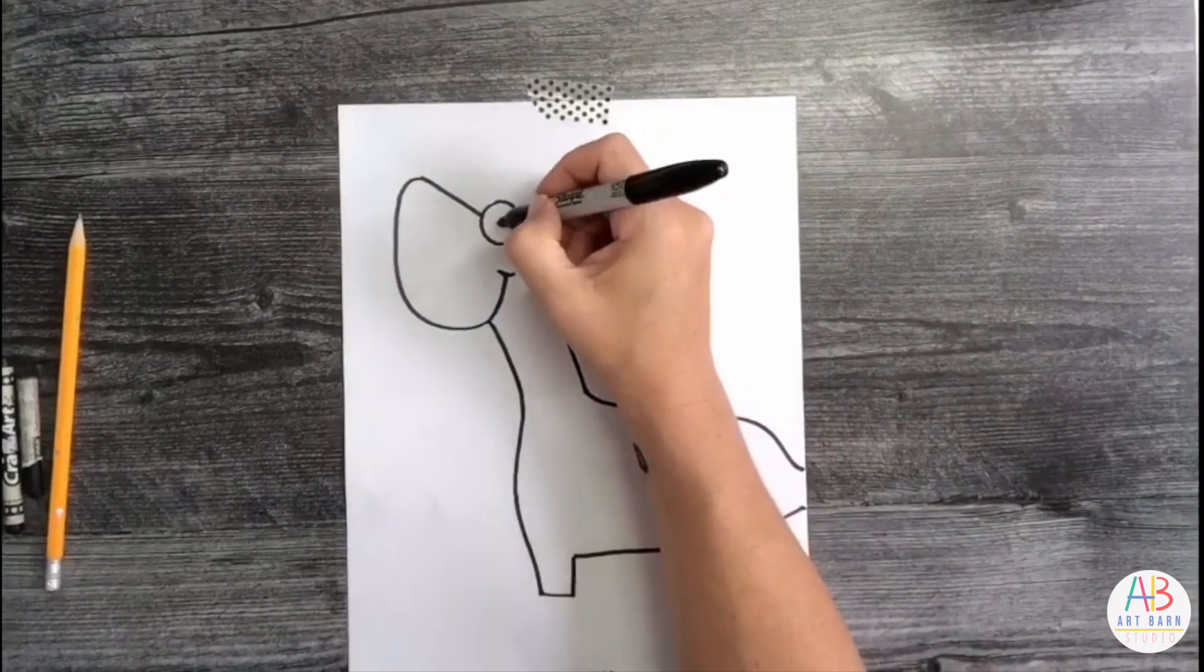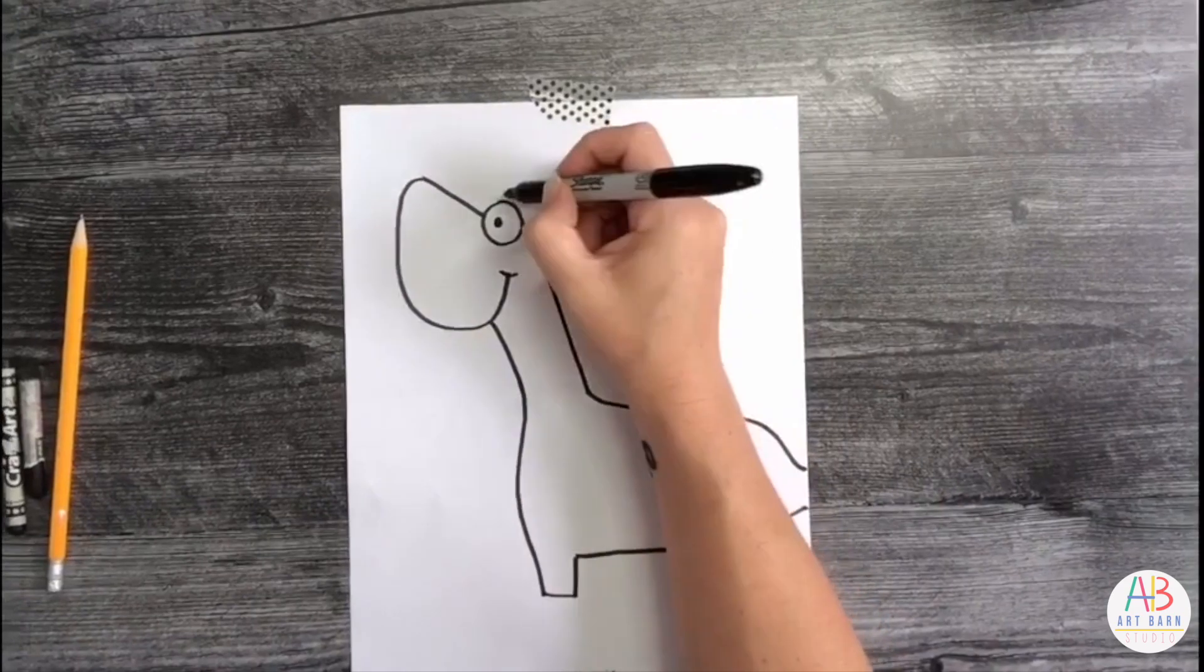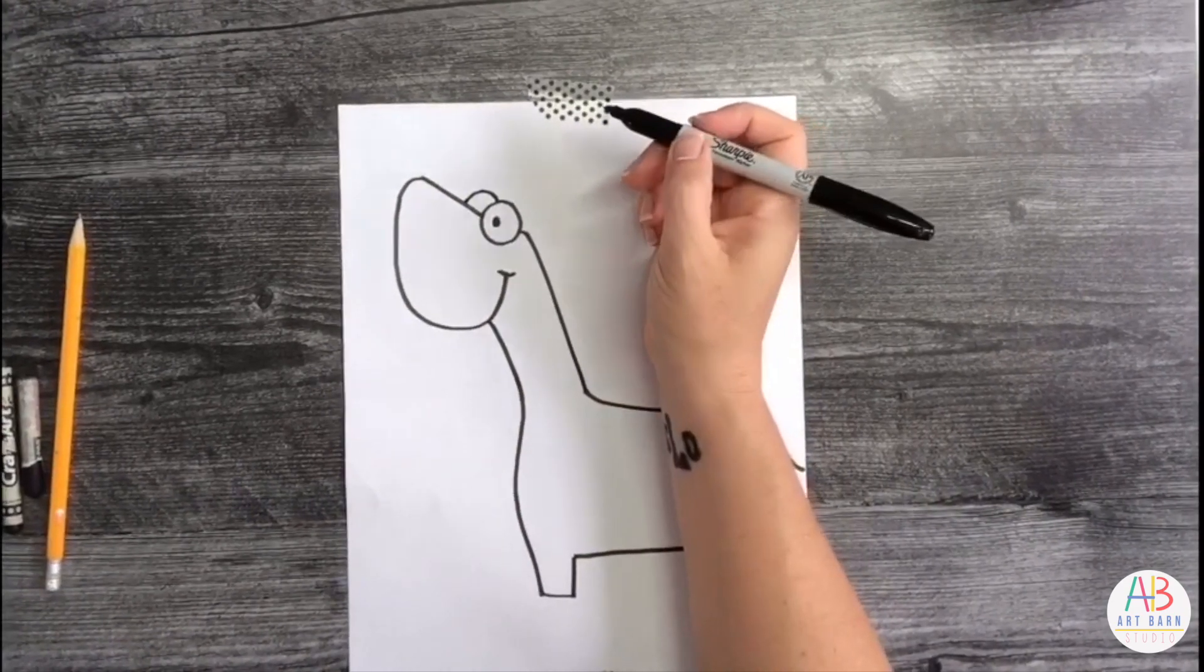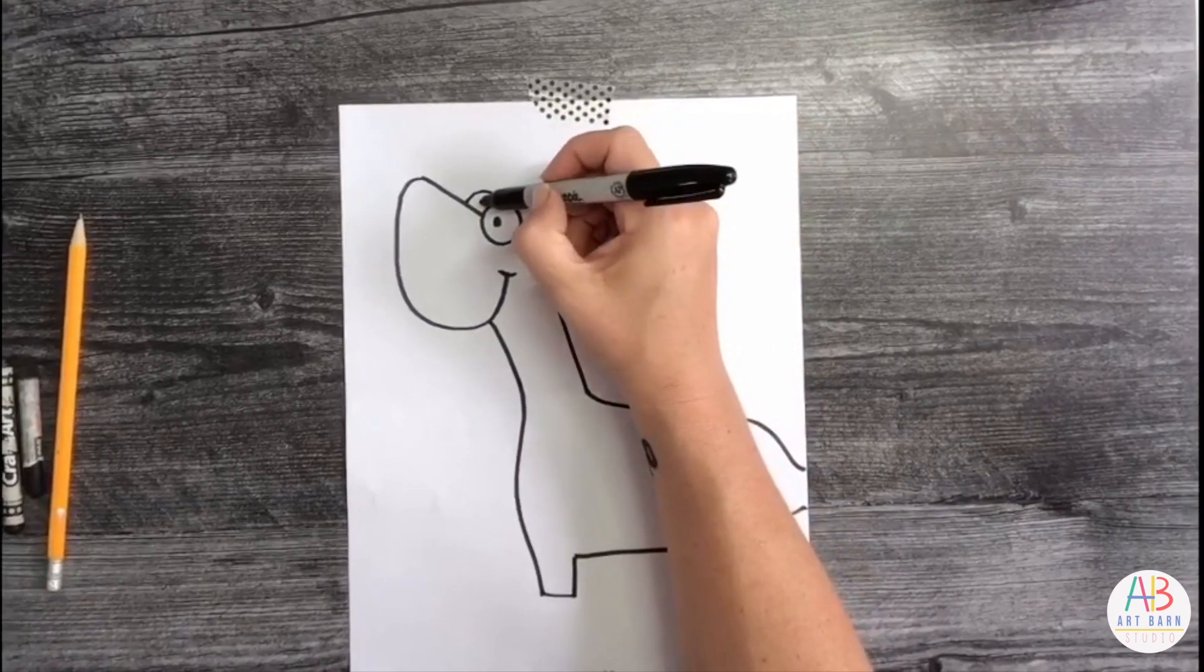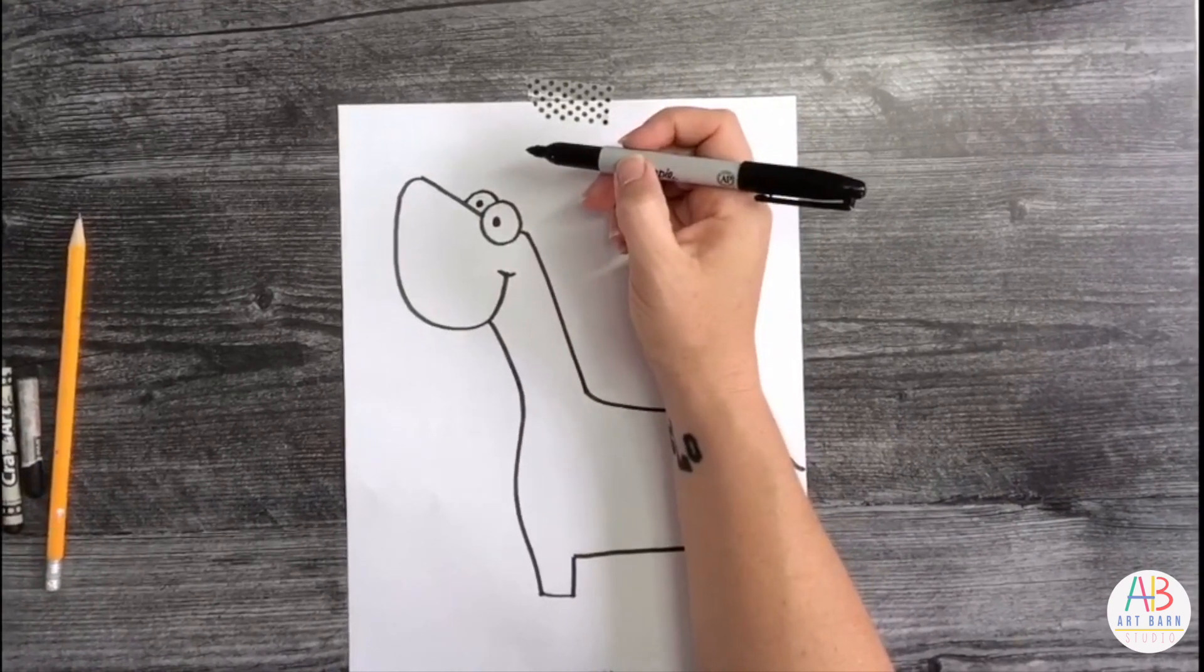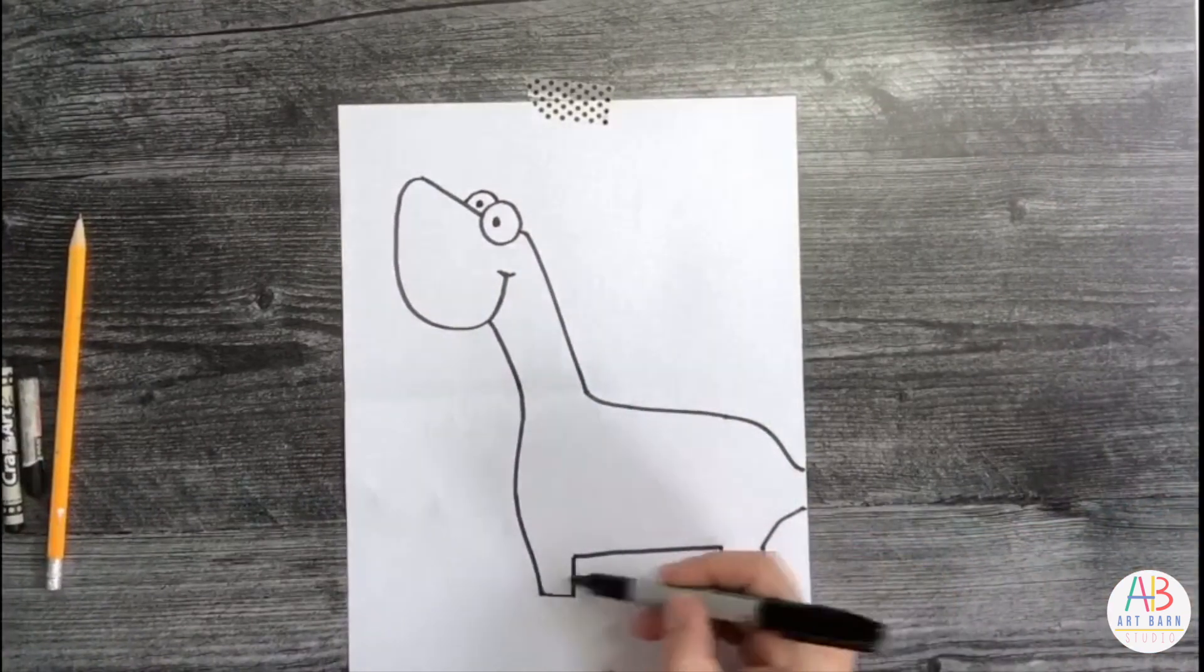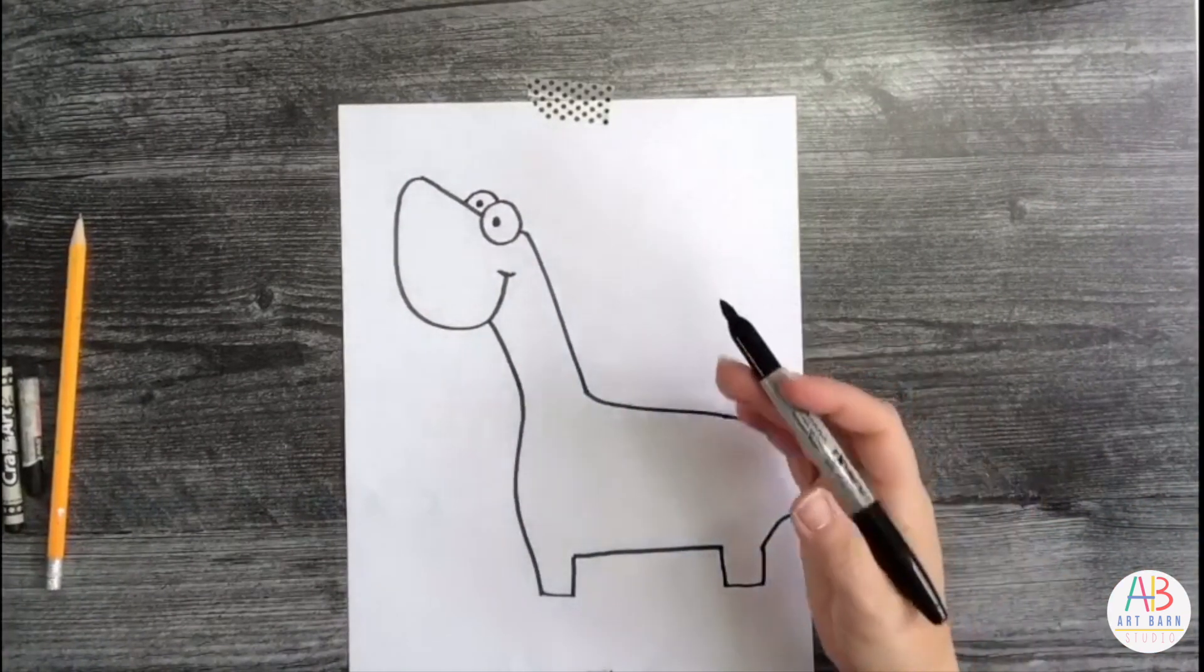So now we're going to add the other eye and the eyeball. I'm going to color in a dot, and then behind here I'm going to do half of an eye because they're overlapping. You will see the eyeball.